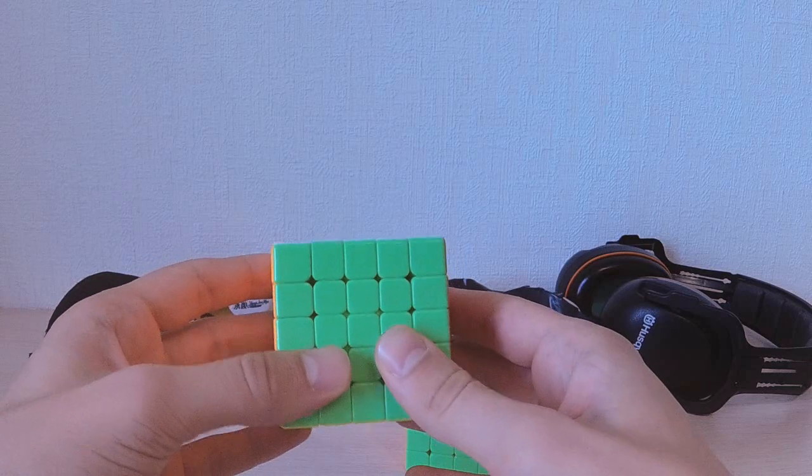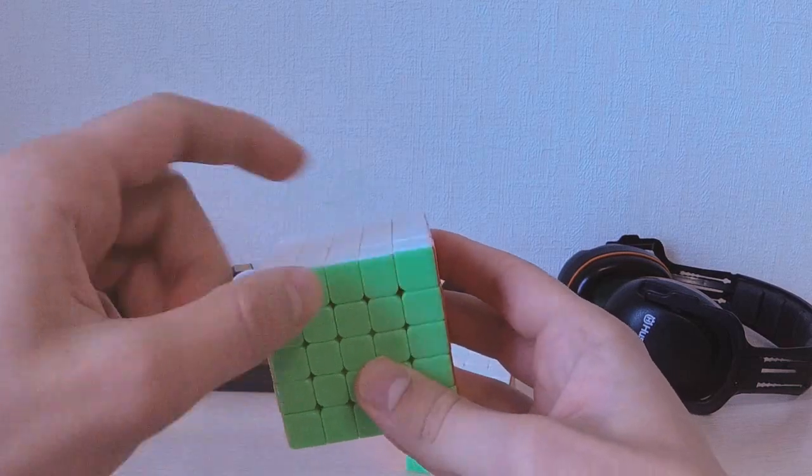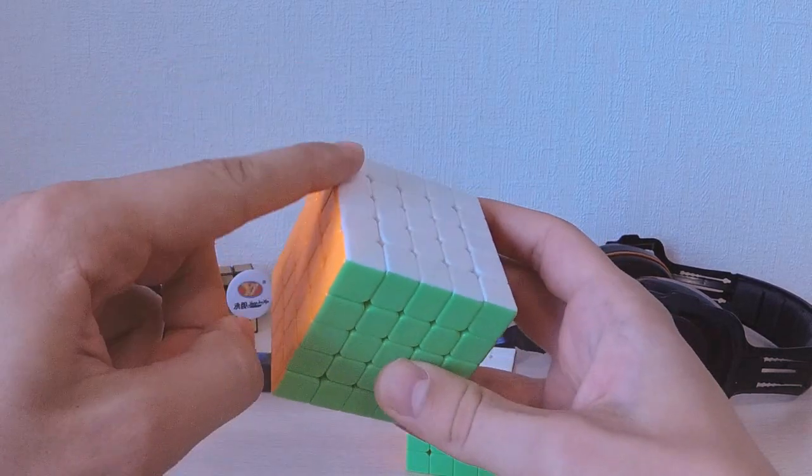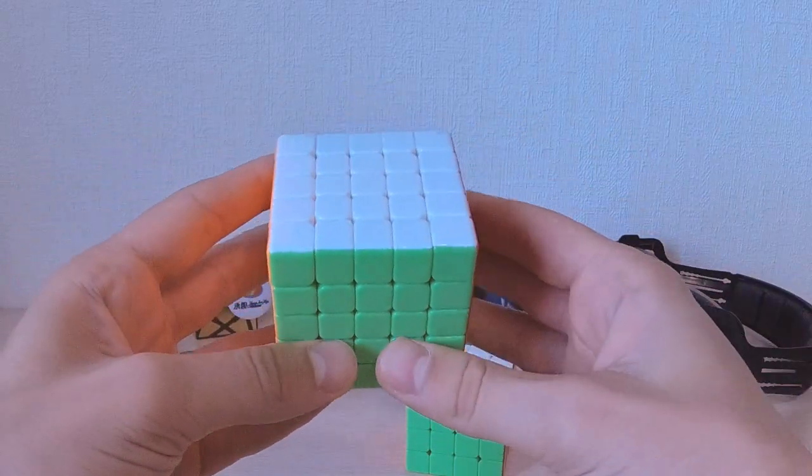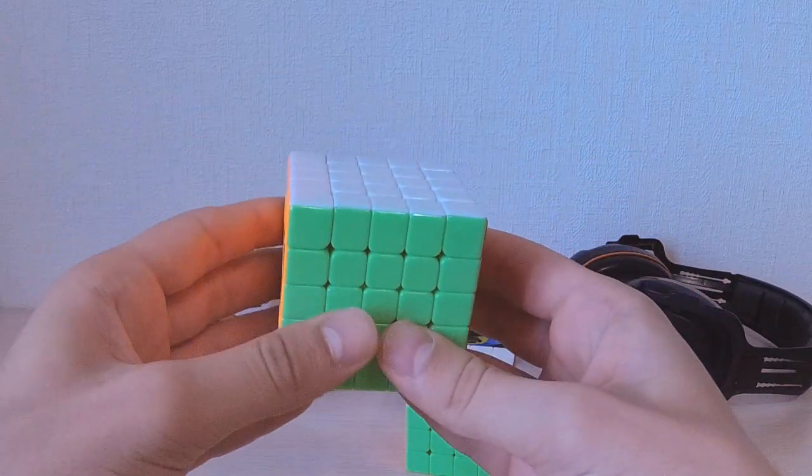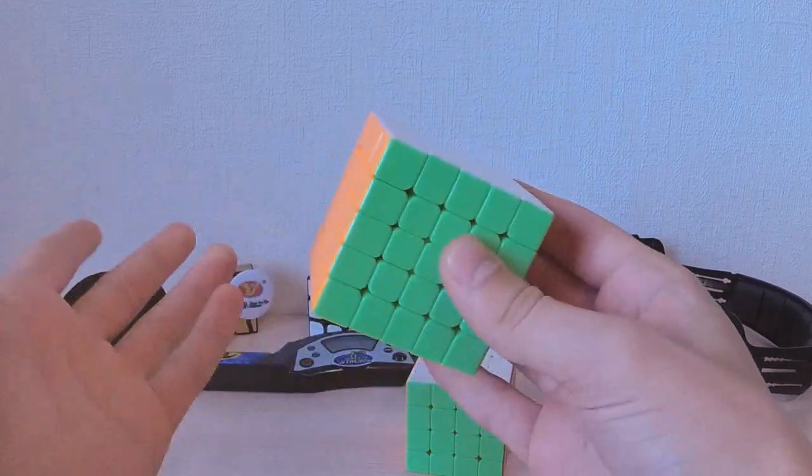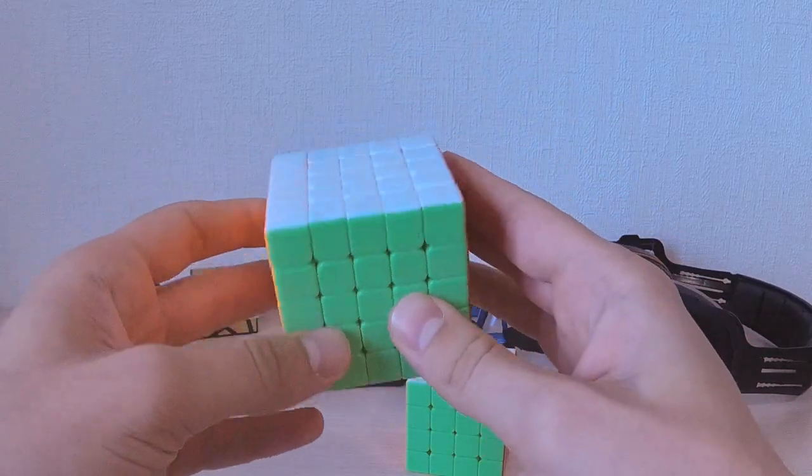A lot of cubers who solve big blind struggle with wings because as you memorize them and you meet your buffer at some point, which means you have a cycle break, there's no easy way to tell whether you have memorized all the wings on the cube or you have some wings left to be memorized.